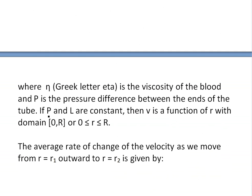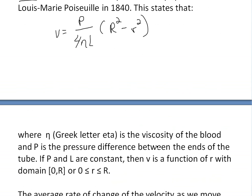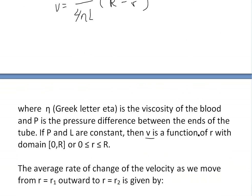If P and L are constant, then velocity is a function of r. The viscosity is constant as well, so it's a function of r with domain zero to R, or r is greater than or equal to zero and less than or equal to capital R, the total radius.